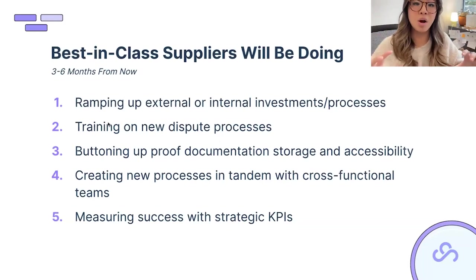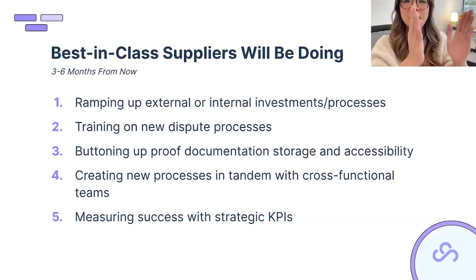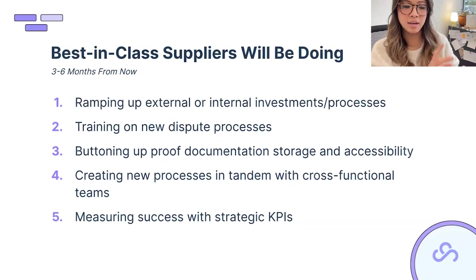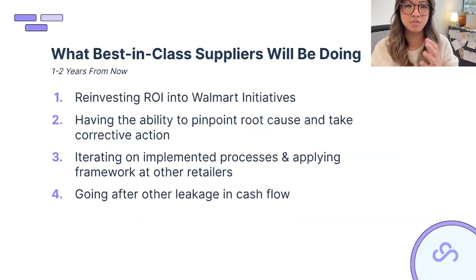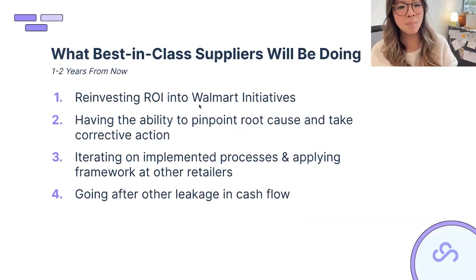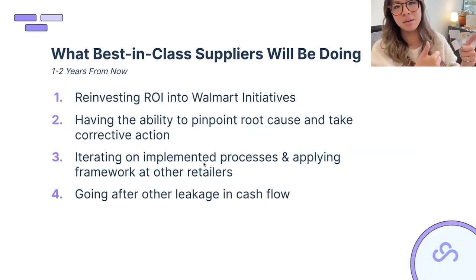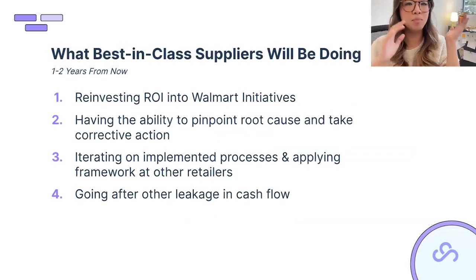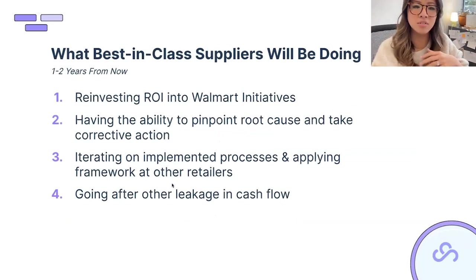Create systems for storing proof documentation, build a communication plan for internal teams, and leverage free resources for training. Think through a three-to-six month plan and a one-to-two year plan. With the money you get back, consider reinvesting in ROI-to-Walmart initiatives, or once Walmart is buttoned up, start focusing on other retailers like Target or smaller ones that you support.